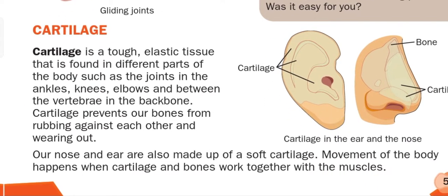Then we have cartilage. Cartilage is a tough elastic tissue found in different parts of our body such as the joints in the ankles, knees, elbows, and between vertebrae in the backbone. Cartilage also forms soft organs like the ears and nose. Cartilage prevents our bones from rubbing against each other and wearing out. Movement of our body happens when cartilage and bones work together with muscles.